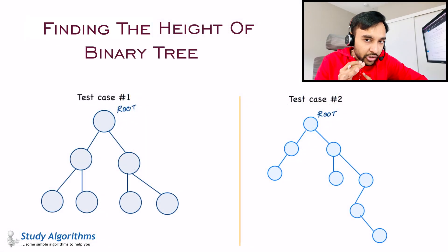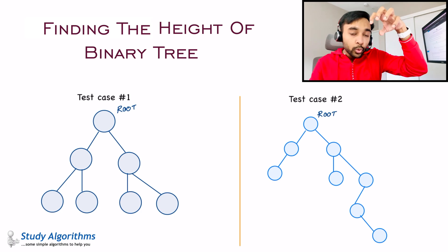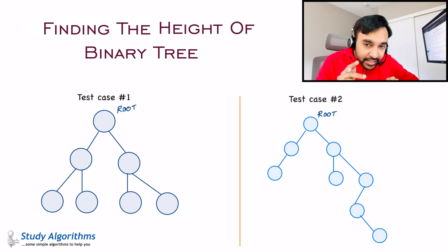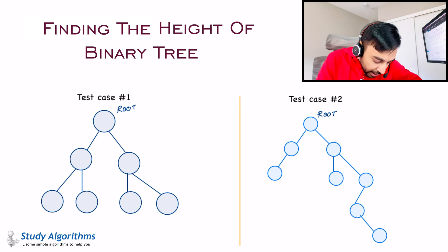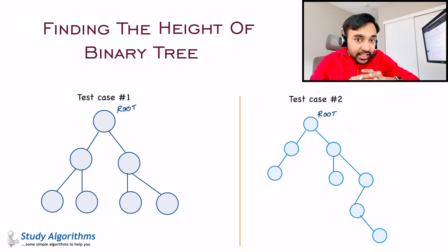Let us first make sure that we understand what you mean by the height of a binary tree. The height of a binary tree simply means the maximum distance between the root node and all the leaf nodes of a binary tree. So let us take up test case number one. In test case number one, you have a node as the root node and you have four leaf nodes in this tree.